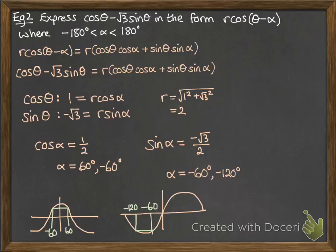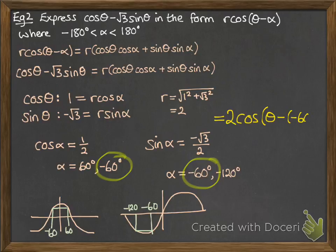But our alpha value has to satisfy both that cos alpha and sine alpha side. So we're looking for what answer comes up in both of those lists. So, of course, it's the minus 60 degrees here. So alpha has to be minus 60 degrees. So we can rewrite our whole thing as equal to 2 cos theta minus negative 60 degrees.